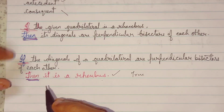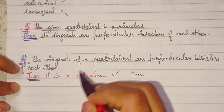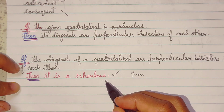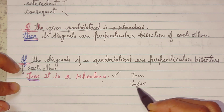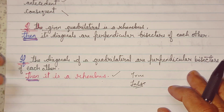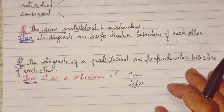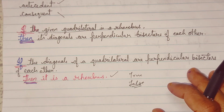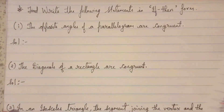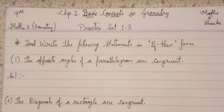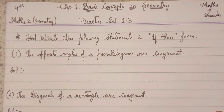But it is not always necessary that the converse is true. When we make the converse, many a time we get false. So sometimes the converse turns out to be wrong. Now let's see some interesting sums while doing this practice set.